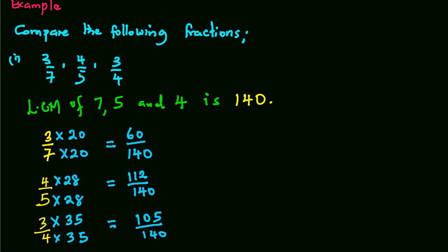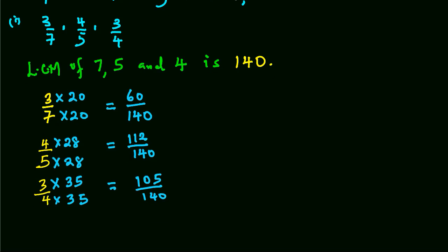But we said that the fraction with the greatest numerator is the greatest. So therefore, we can conclude here that 4 over 5 is greater than 3 over 4, which is greater than 3 over 7.